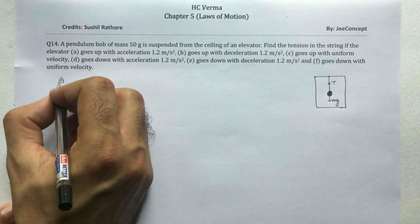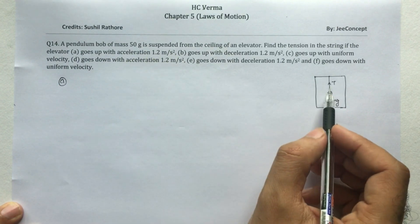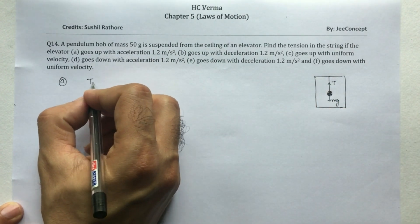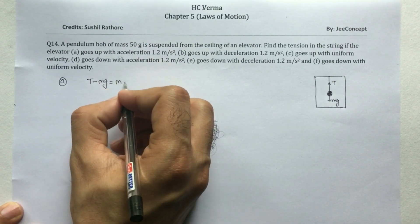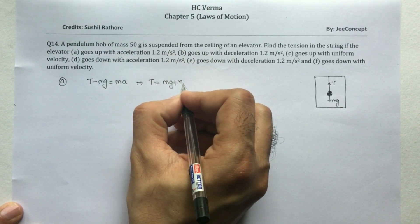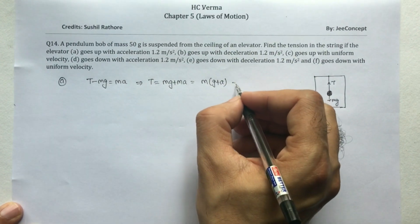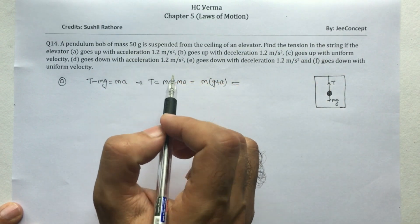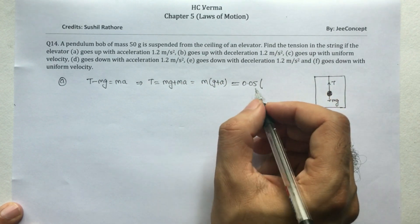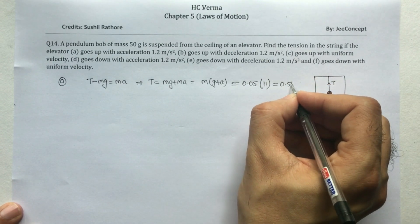The first part is A, when the elevator goes up with acceleration 1.2 m/s². In this case the elevator is going up, so the equation is T minus mg equals mass into acceleration, which gives T equals mg plus ma, or m times (g plus a). With mass 0.05 kg, that is 0.05 times (9.8 plus 1.2), which equals 0.05 times 11.